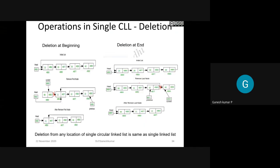Insertion and deletion in linked list is very easy without any memory wastage, but you have to worry about the pointer adjustment. For deletion at the beginning, the header node was pointing to the first node at address 4000; after deletion, the head moves to the next node. For deletion at the end, it's like derailing a coach from a train - the coach is detached and the link is freshly established.